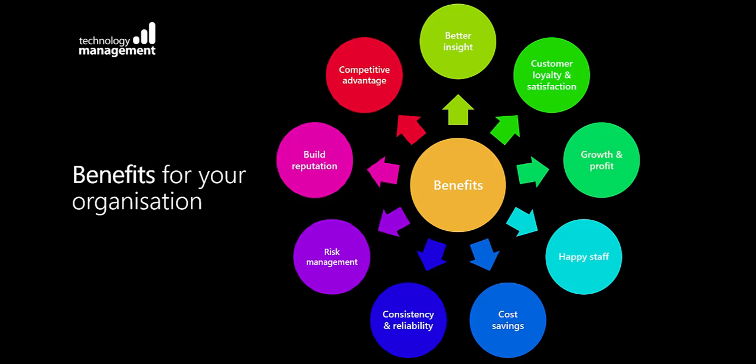Cost savings can be achieved with the enhanced productivity CRM offers through streamlining and automating business processes. The business process functionality helps to ensure customers receive a consistent and reliable experience. There's an element of risk management in the sense that business processes and knowledge sharing can help prevent any single points of failure. The consistency and reliability, along with risk management, means it helps to protect and build your organisation's reputation. Knowledge sharing and key insights into your data encourage creativity and innovation that competitors may not be able to copy easily, giving you that crucial competitive advantage.